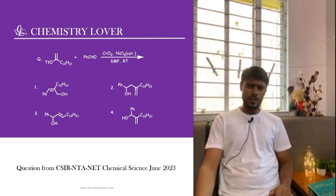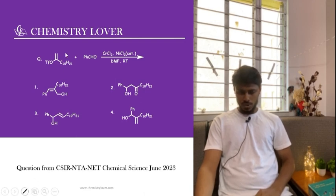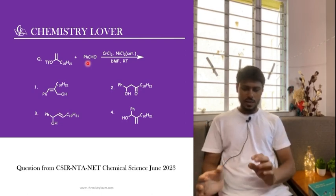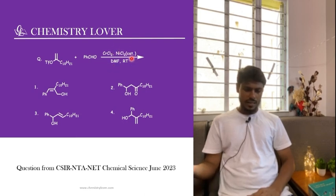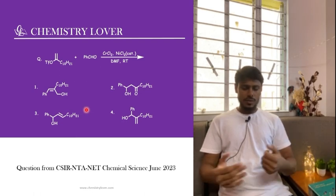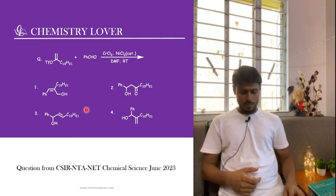Without further delay, let's start. In this question, we have two components: one aldehyde part and one alkyne part. In that alkyne we have a leaving group — OTf, a leaving group. The reaction conditions are chromium chloride and nickel chloride, but nickel chloride is used in catalytic amount. You have to identify the product from four options. This is a very well-known name reaction, and if you know it, you can predict the product very easily.